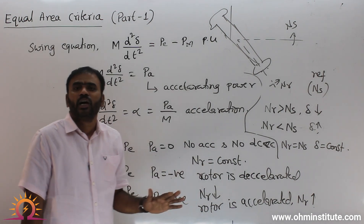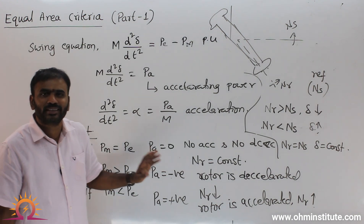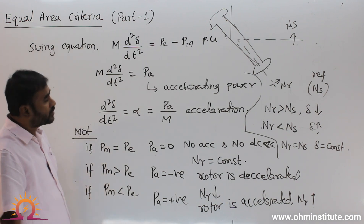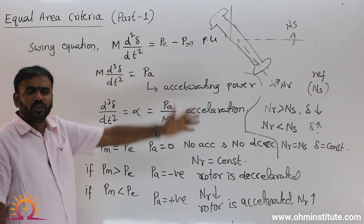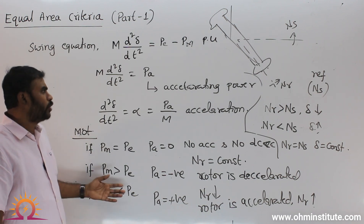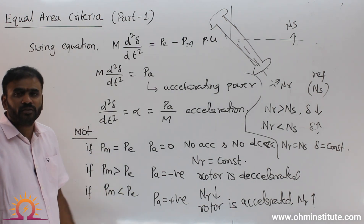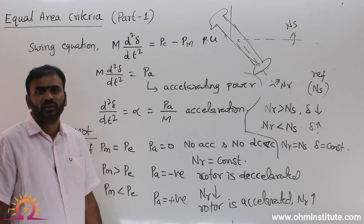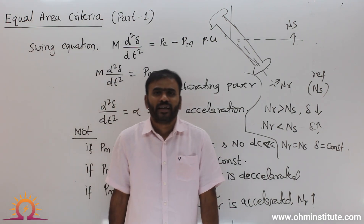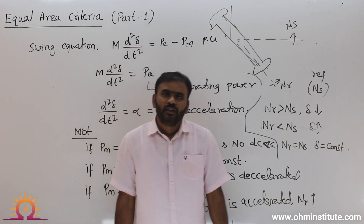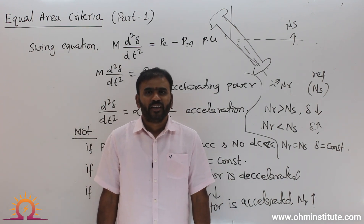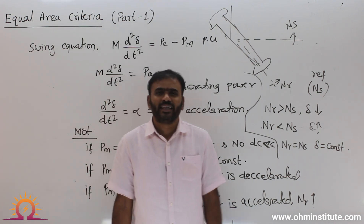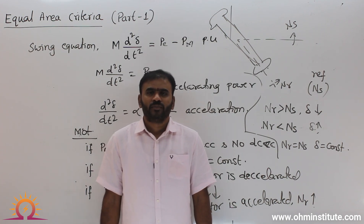These are the basics for understanding equal area criteria. We have understood the swing equation — how it explains the dynamics of the synchronous machine — in both per unit and megawatt forms, the importance of acceleration and deceleration, and how rotor speed and load angle change for both generator and motor action. That concludes part 1. In the next video, we will see the derivation for equal area criteria, followed by case studies and calculations of critical clearing angles and critical clearing time.